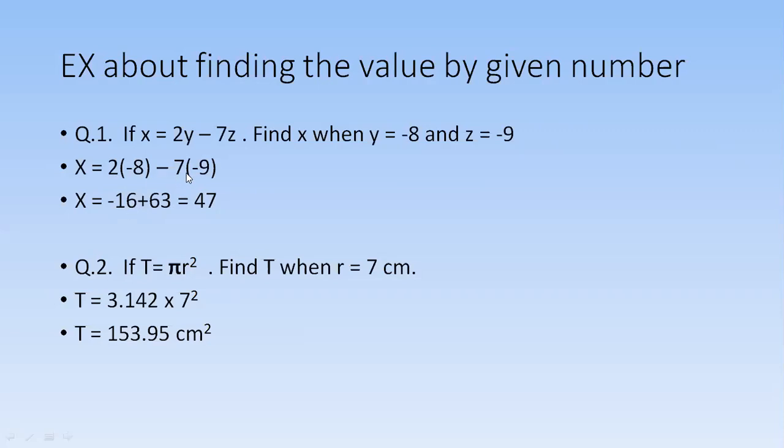Then minus minus plus. Remember one thing, I'm repeating it once again: you need to multiply the sign first, and then you will multiply the number or any variable if it is available. So minus minus is plus, and minus 16 plus 63, once you calculate it by using calculator, it will become 47.